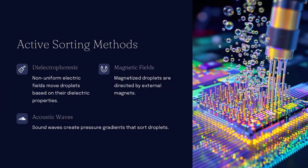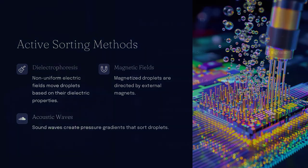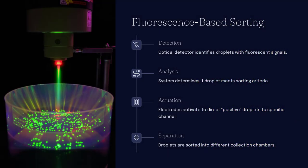For example, passive sorting can be achieved simply by adjusting the angles and branching points of the channels. Faster or larger droplets are deflected into one path, while slower or smaller ones take another.